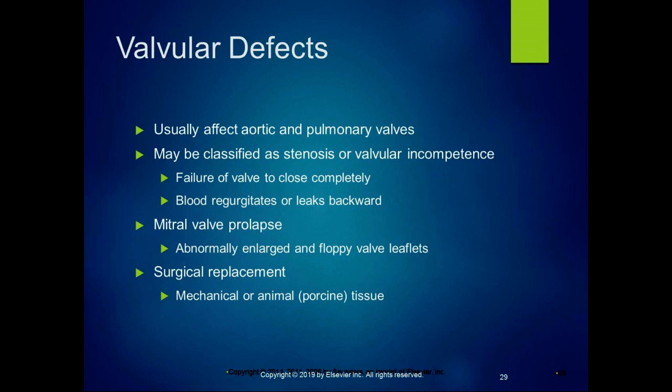For valvular defects, they usually affect the aortic and pulmonary valves — the ones going out of the ventricles. They might be classified as stenosis or valvular incompetence, which is failure of the valve to close completely. When the valve doesn't close completely, blood regurgitates or leaks backwards. With mitral valve prolapse, there are abnormally enlarged and floppy valve leaflets so the valve can't close completely. These valves can be replaced surgically with either a mechanical or animal tissue valve — they use pig heart valves to replace mitral valves, which is pretty interesting.